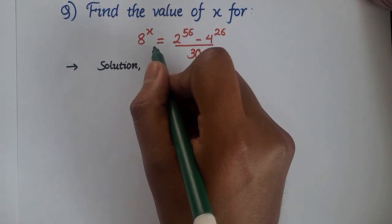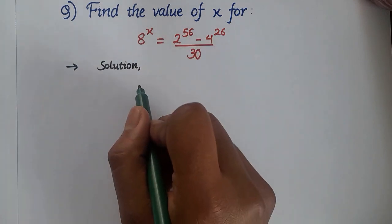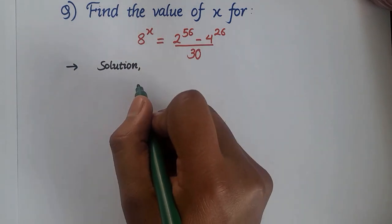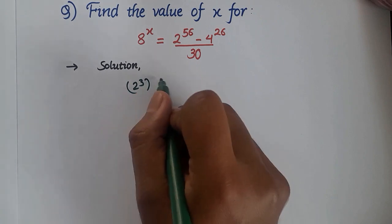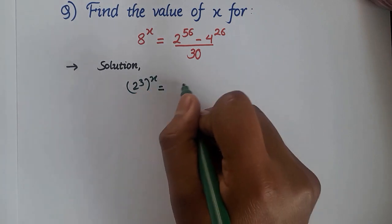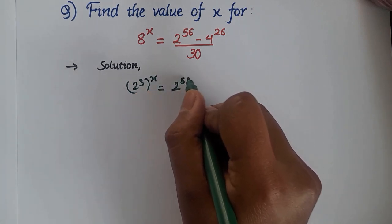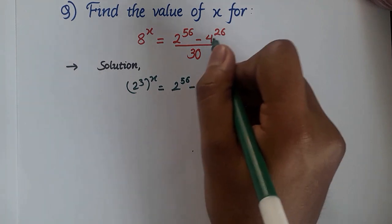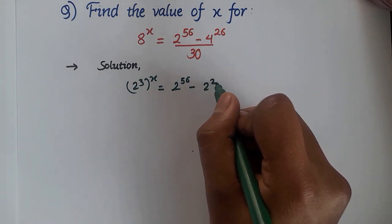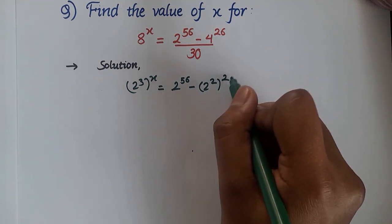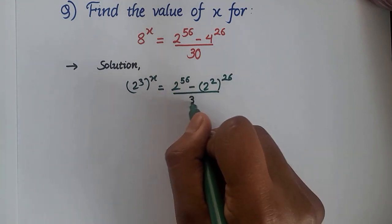Let's see, we can write 8 in terms of the power of 2 which is 2^3. So (2^3)^x will be equal to 2^56 minus, and this 4 can be written as 2^2. So (2^2)^26 over 30.